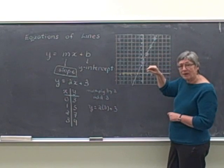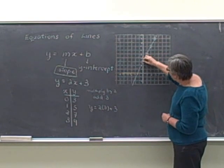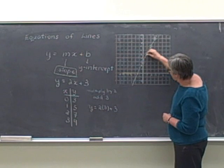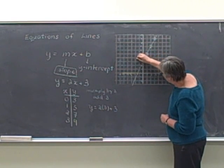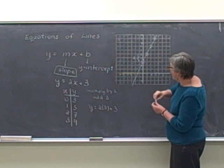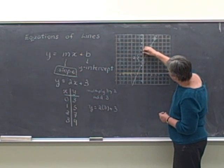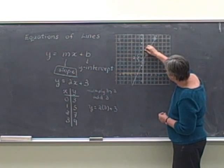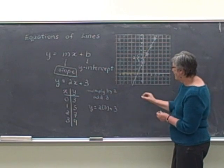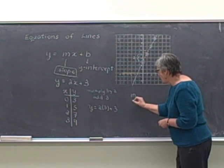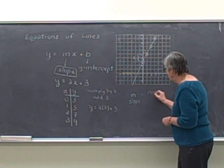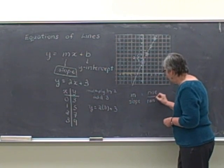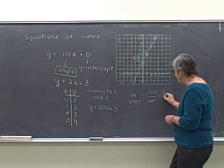And you may know these by the terms rise and run. As I go from point 0, 3 up to this point, I'm going up 2, that's the rise. And then I'm going in the x direction, 1, that's the run. And so if I look at the slope as rise over run, we see the slope is 2 over 1.